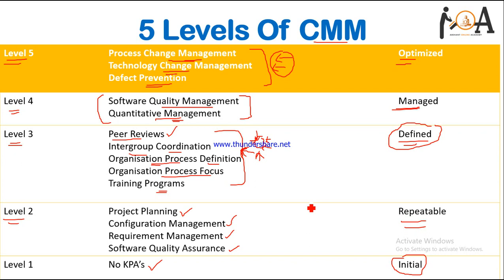So these are the five levels of CMM. To summarize, the levels are: Initial, Repeatable, Defined, Managed, and Optimized — five levels in total. These are the core concepts of CMM. For any further elaboration, queries, or doubts, you can comment to us and we will try to solve your queries as early as possible on our social web pages, the links for which are given in the description section.